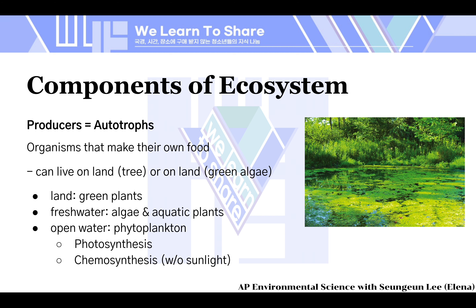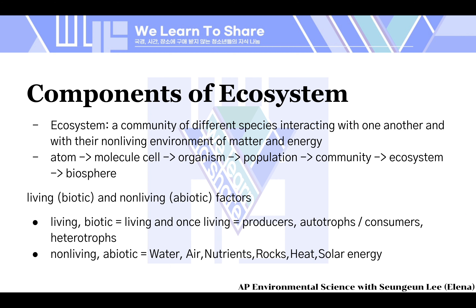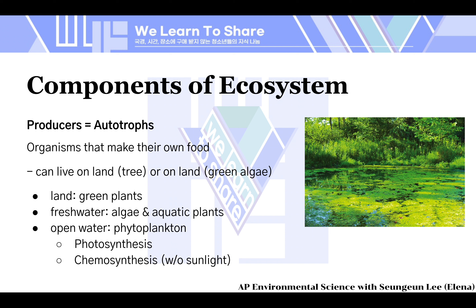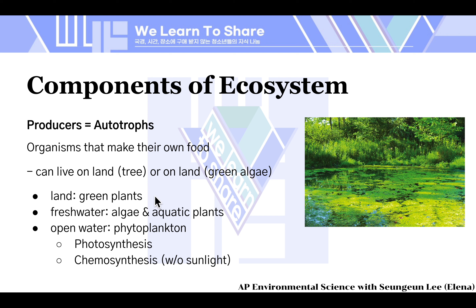Let's look more into the biotic, the living factors of the components of the ecosystem. First we have producers, also called autotrophs — organisms that make their own food. They can live on land, like trees and green plants, or on water, like green algae. On freshwater, they're algae and aquatic plants, and on open water, they're phytoplankton.